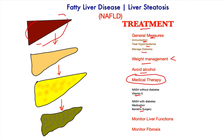Once steatohepatitis is diagnosed, it is important that liver function tests are monitored to ensure treatments are effective. This can be done at three or six monthly intervals, as well as assessing the liver for development or progression of liver fibrosis. This completes this brief talk on fatty liver disease. If you have any comments, please do share.